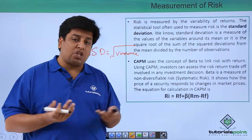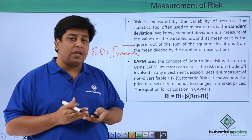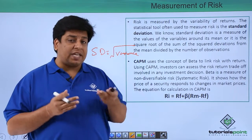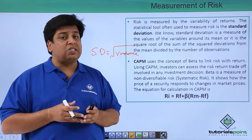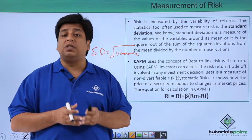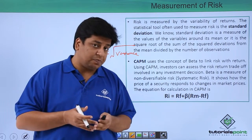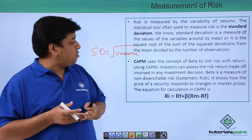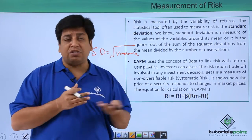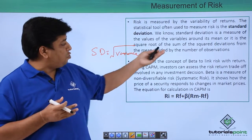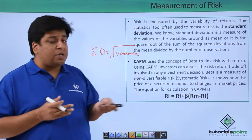To find the variance, you calculate (X - X̄)², and the summation of (X - X̄)² divided by n minus 1 gives you the variance. The square root of variance gives you the standard deviation. Standard deviation is the measure of the values of a variable around its mean — how volatile the return is from the average return. The denominator can be n or n minus 1, where n is the number of observations.